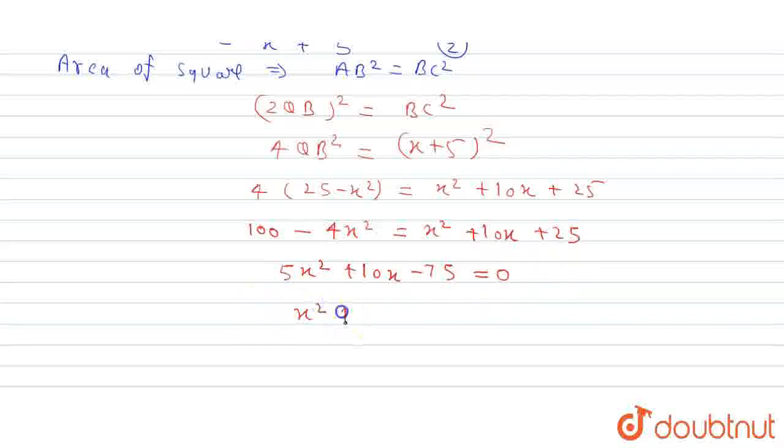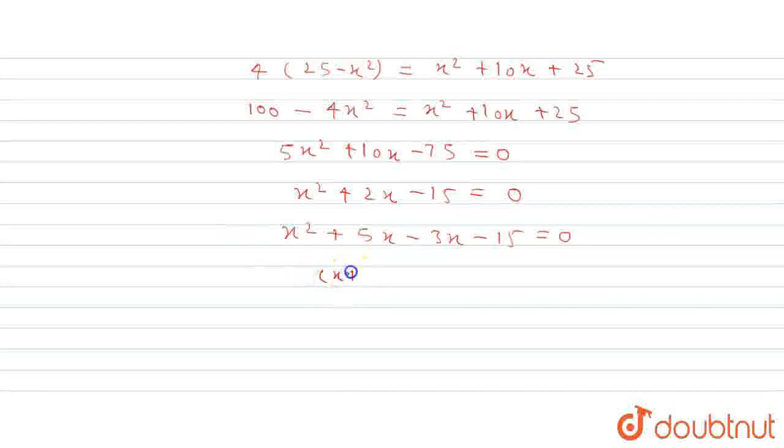That is x² + 2x - 15 equals 0. Now we factor this. We have x² + 5x - 3x - 15 equals 0. When we solve this, we have (x + 5)(x - 3) equals 0. Here we have two values: x equals -5 and x equals +3. x equals -5 is not possible, so x equals 3.